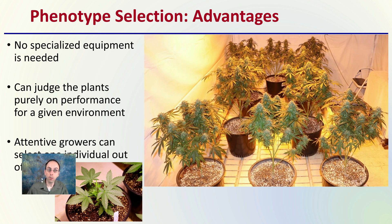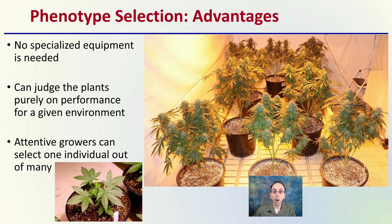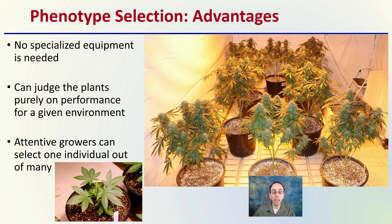The advantages to using phenotype selection, which is often used by growers: there's no specialized equipment needed, and growers can judge plants purely on performance for their given environment. If they keep the environment consistent, that allows grow-to-grow comparisons. Attentive growers can select one standout individual out of many, preserve those genetics, clone them, and carry them into future lineages.